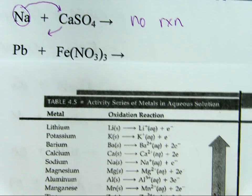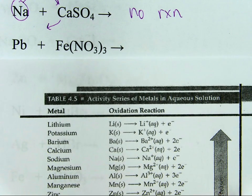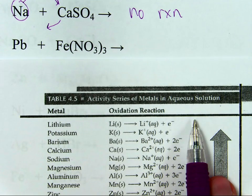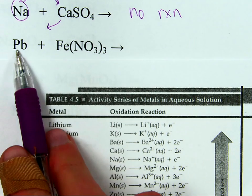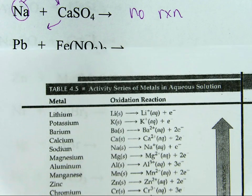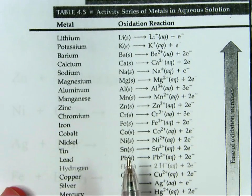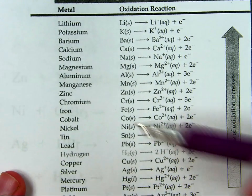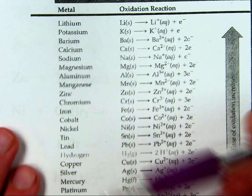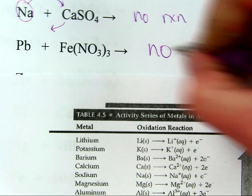Okay, let's look at the next one. Lead and iron nitrate, iron three nitrate rather. This will happen if lead is above iron on the list. So looking at the list, there's lead. Is it above iron? The answer is no, it is not above iron. No reaction again.